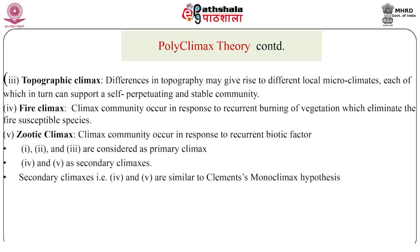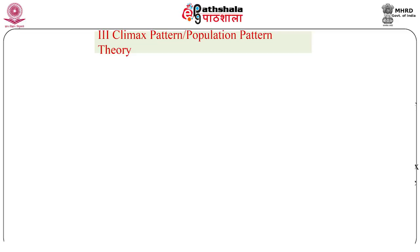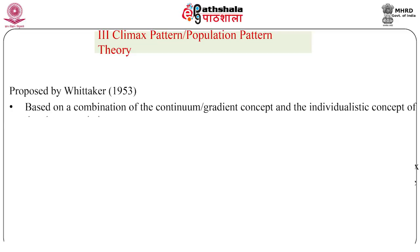Secondary climaxes — fire climax and zootic climax — are similar to Clements' monoclimax hypothesis. The climax pattern theory or population pattern theory was proposed by Whittaker in 1953, who rejected the classification approaches of describing climax and proposed this theory, which is based on a combination of the continuum or gradient concept and the individualistic concept of plant association. He believed that since species composition and the balance of climax community is determined by the total environment — including both biotic and abiotic factors of the ecosystem.